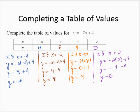Now if we think about this, we have four ordered pairs here. We have negative 4, 12, negative 2, 8, 0, 4, and 2, 0.